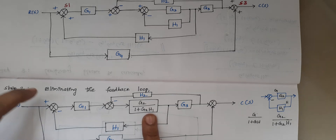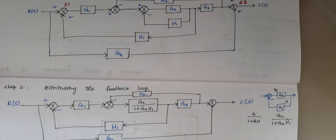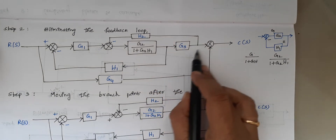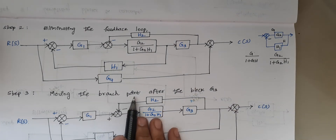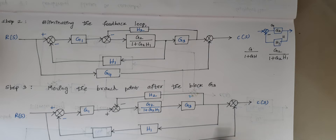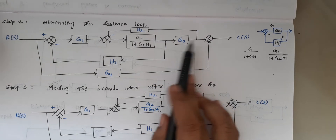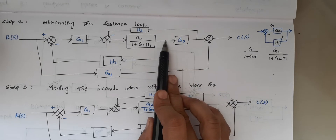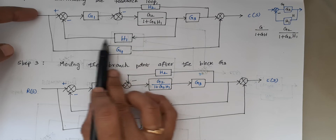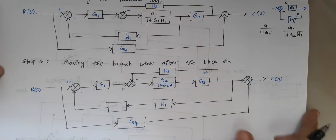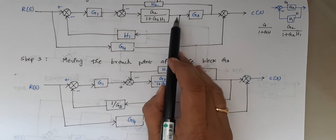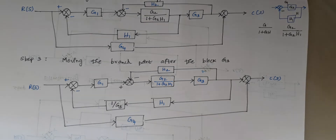Step 3 is moving the branch point after block G3. When you move a branch point after a block, the rule is you must include the reciprocal of that element. So this line moves after G3, and we must include 1/G3 in the feedback path. The remaining H1 feedback element stays, so we write H1 multiplied by 1/G3.